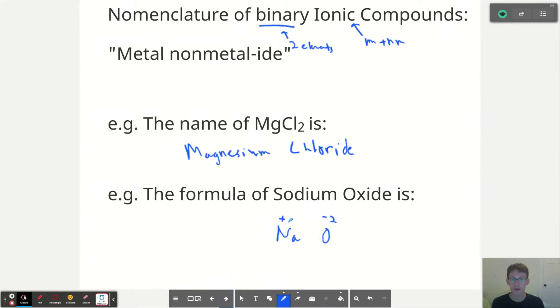And oxygen will gain two to get the nearest noble gas configuration as well. So we have a negative two ion and a positive one. And to make their charges cancel out, I need two sodium ions to balance out my negative two oxide anion. So although my work is shown here with a positive and a negative above the elements, my answer is Na2O.